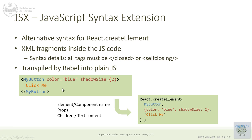Every element is made of three different parts: we have the element type or component name, we have the properties — zero or more properties — and we have the children, which is everything inside the component itself. All this information is available in the component function: the properties inside props, and the children inside the special property called props.children.